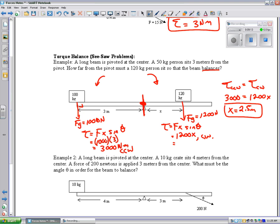Now, does that make sense? Well, he has to be closer in, because he weighs more. So, yeah, the 100 kilogram person was 3 meters away. This one's 2.5, so at least it makes sense.